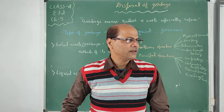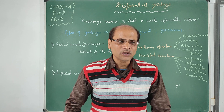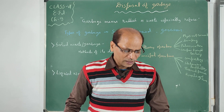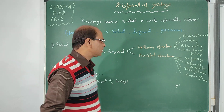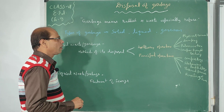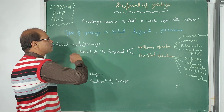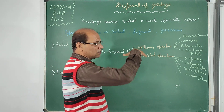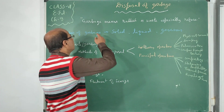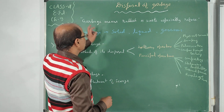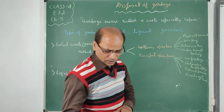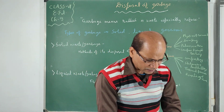Disposal is a simple word, but how we dispose in a safe way is the main thing. In this chapter, we will cover disposal of solid, liquid, or gaseous types of garbage. Garbage is essentially waste — specifically the refuse of domestic origin.